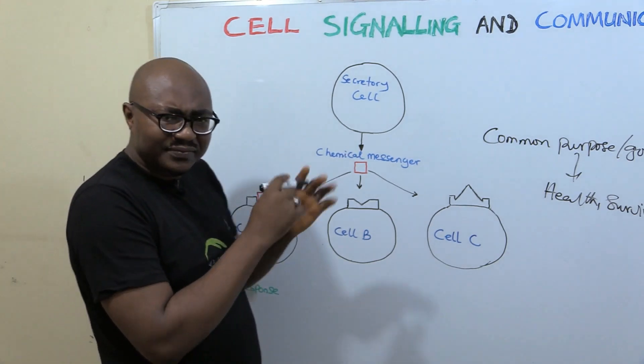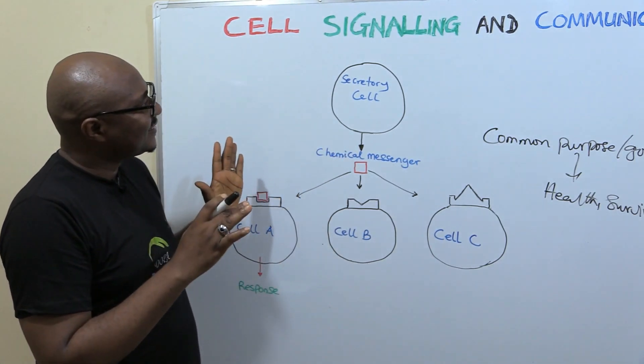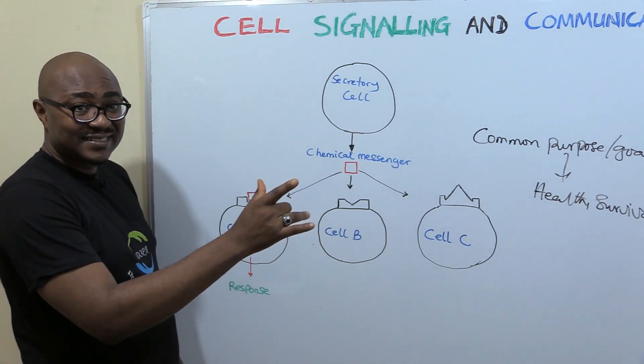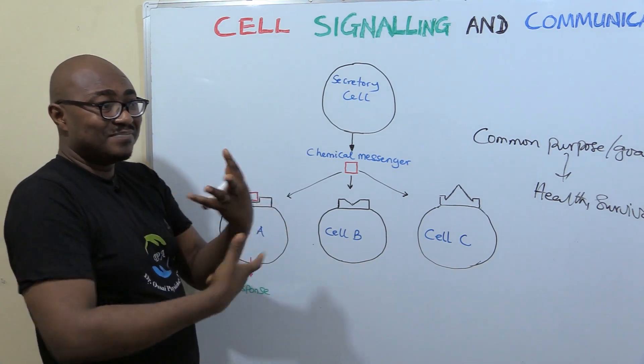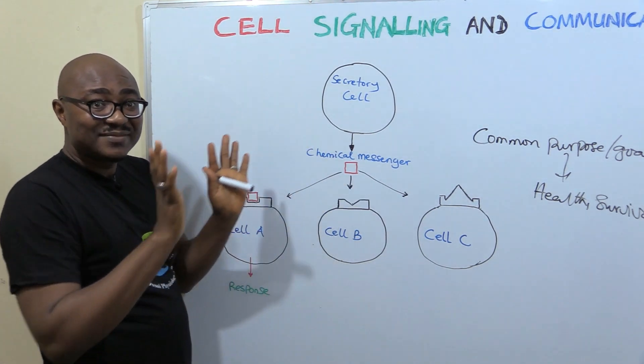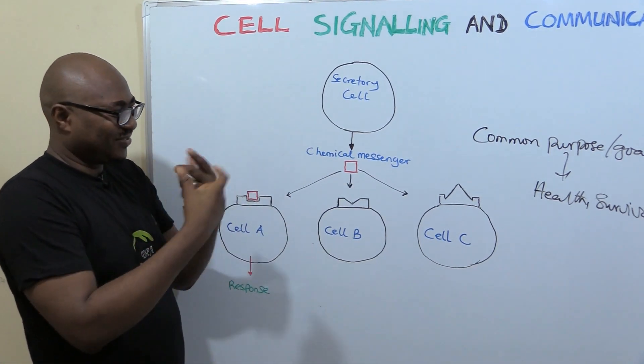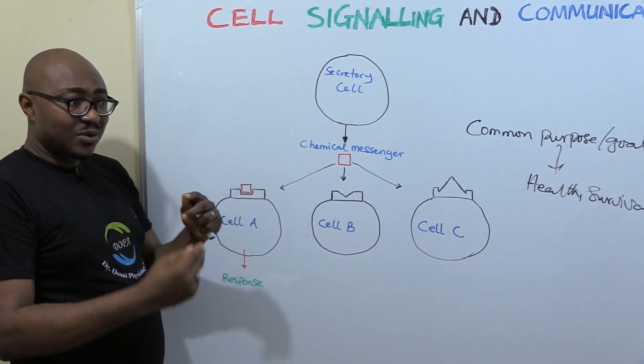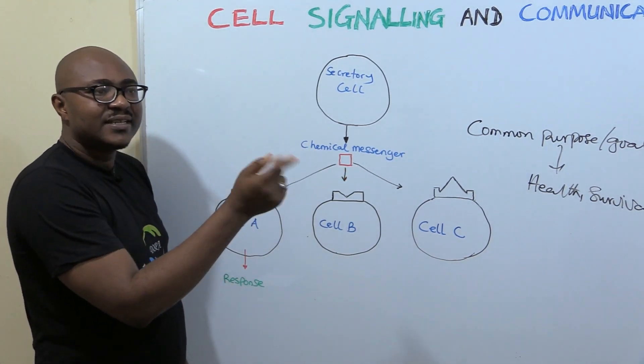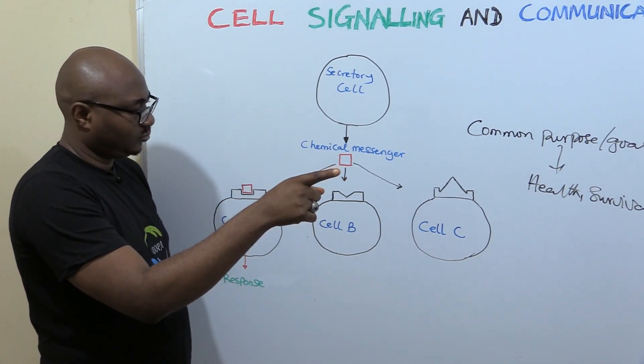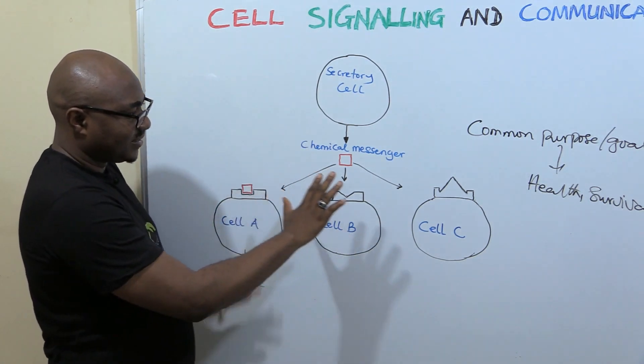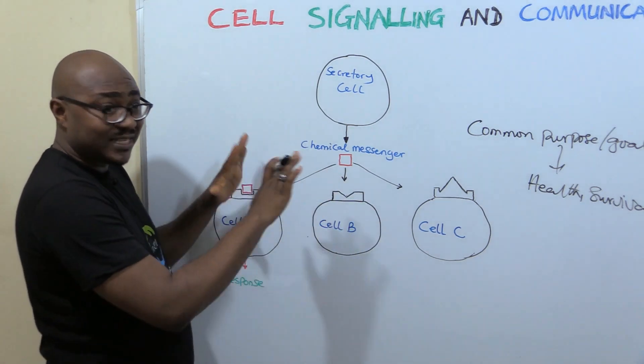Now, let's try and define cell signaling. So it is the process and it involves the mechanism, the several mechanisms by which cells send out coded information that will elicit a response. All right? So look at this diagram. It's describing something. We're going to deal with all of that.